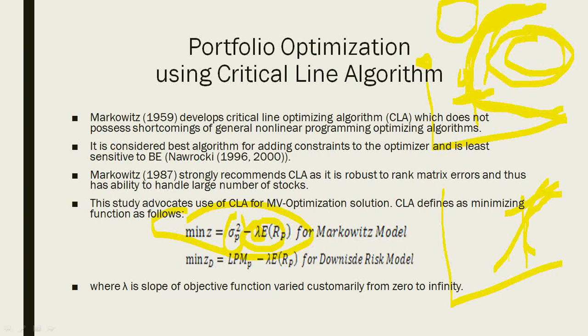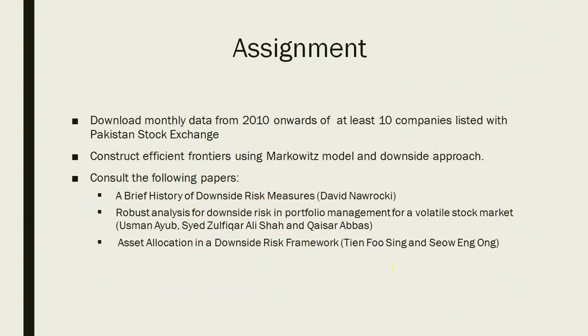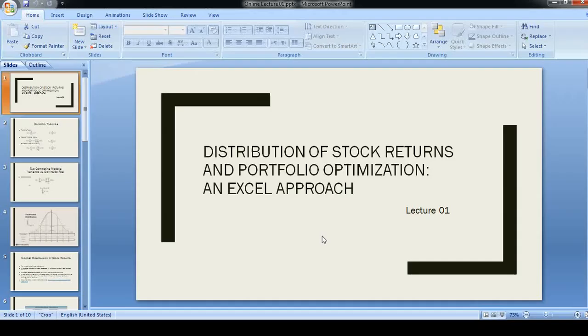Markowitz defined a Z function and optimized it using lambda, where lambda represents the slope of the line. When lambda has positive values corresponding to the efficient frontier, you will get only those points that are above the global minimum variance point.